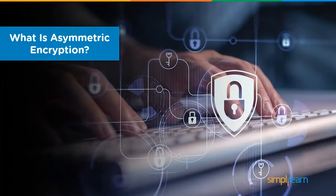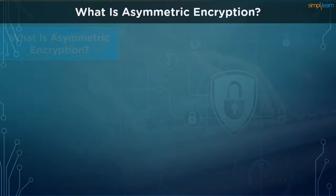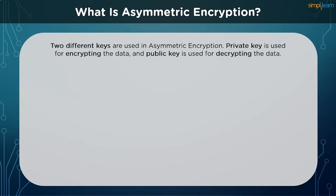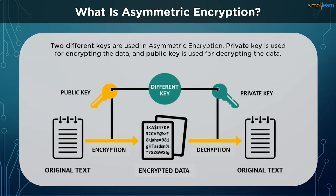Let us take a look at what asymmetric encryption is. Asymmetric encryption uses a double layer of protection. There are two different keys in play here: a private key and a public key. The public key is used to encrypt the information pre-transit, and the private key is used to decrypt the data post-transit. This pair of keys must belong to the receiver of the message. The public keys can then be shared via messaging, blog posts, key servers, and there are no restrictions for it.